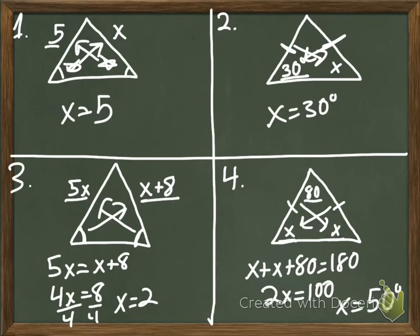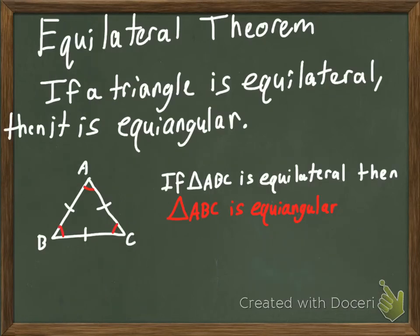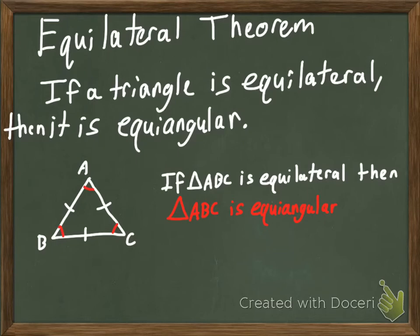So there are uses of the Base Angles Theorem and its converse. Next, we have the Equilateral Triangle Theorem. It says that if a triangle is equilateral, then it is equiangular. So every single equilateral triangle is also equiangular. In this picture, if triangle ABC is equilateral — if we know that all the sides are congruent — then we also know that ABC is equiangular, meaning angles A, B, and C are also congruent.